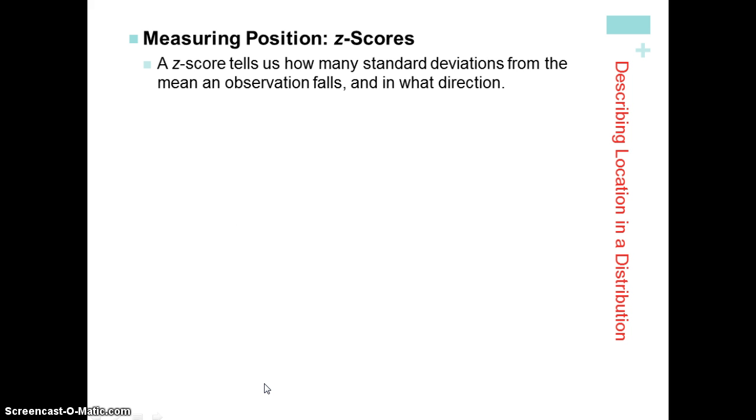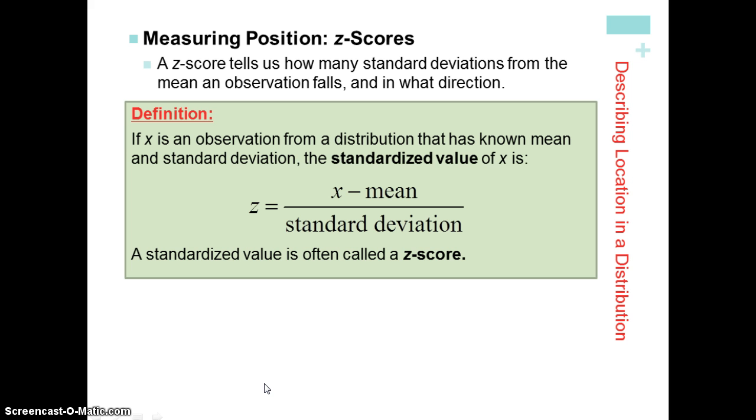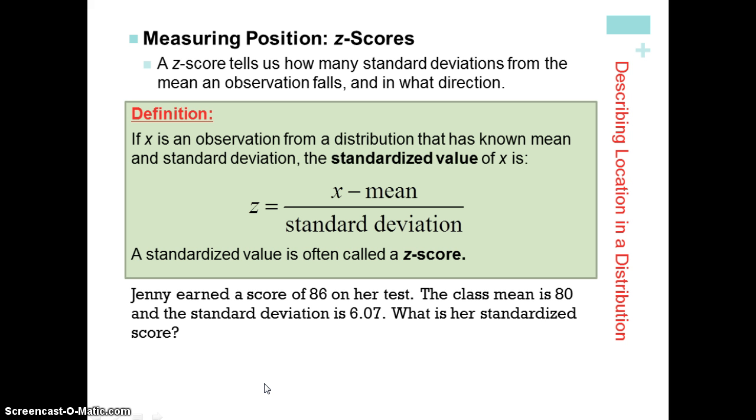Z-scores. This is a new measurement that we haven't talked about. What it does is it counts standard deviations away from the mean. And it's sensitive to direction. So if an individual is below, the value is below the mean, then we're going to have a negative z-score. And if it's above the mean, we're going to have a positive z-score. So it's going to indicate both how many standard deviations away from the mean and the direction. The way that we calculate the z-score is the individual data point X minus the mean for the variable divided by the standard deviation. Okay, so back to Jenny's example. She got an 86 on her test. If the class mean is 80 and the standard deviation is 6.07, then her standardized score is 0.99. What does that mean? Well, it's positive. That means she scored above the mean. And it's almost 1. That means her score is 1 standard deviation above the mean score on that test.